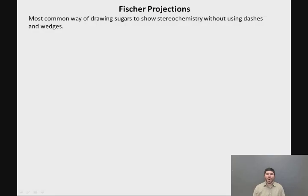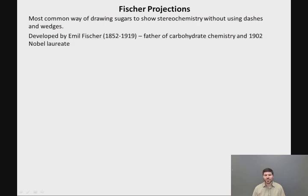In this lesson, we look at what a Fischer projection is, the structures of the open chain form of sugars introduced on the previous slide, and how you draw a Fischer projection. This is the most common way of drawing sugars to show stereochemistry without using dashes and wedges. Fischer projections are named after the great chemist Emil Fischer, who lived from 1852 to 1919. He was the father of carbohydrate chemistry and won the 1902 Nobel Prize in Chemistry for elucidating the three-dimensional structure of the simple sugars.